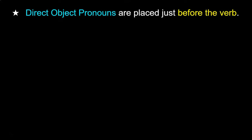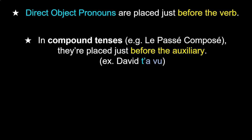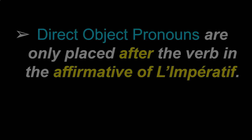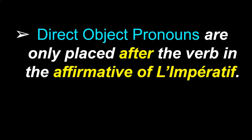Direct object pronouns are placed just before the verb. For verb tenses with an auxiliary and a past participle — like le passé composé — the direct object pronoun goes before the auxiliary verb. For example, 'David t'a vu' — David saw you. In sentences where there is a conjugated verb and an infinitive, the direct object pronoun goes before the infinitive. For example, 'Je vais manger le chocolat' becomes 'Je vais le manger.' The only time a direct object pronoun goes after the verb is in the affirmative imperative.